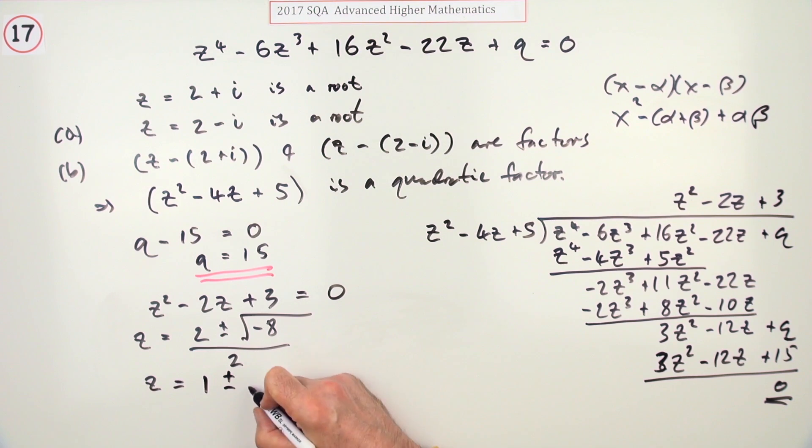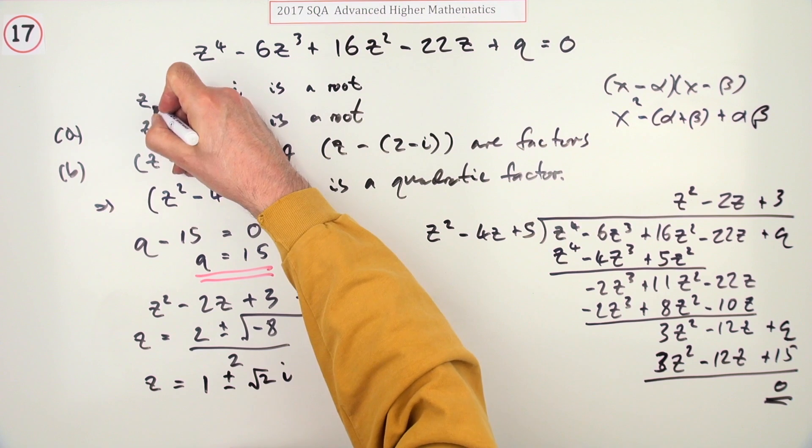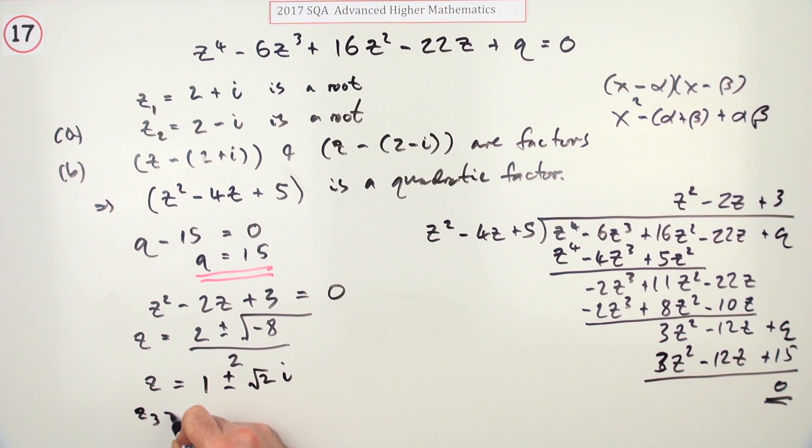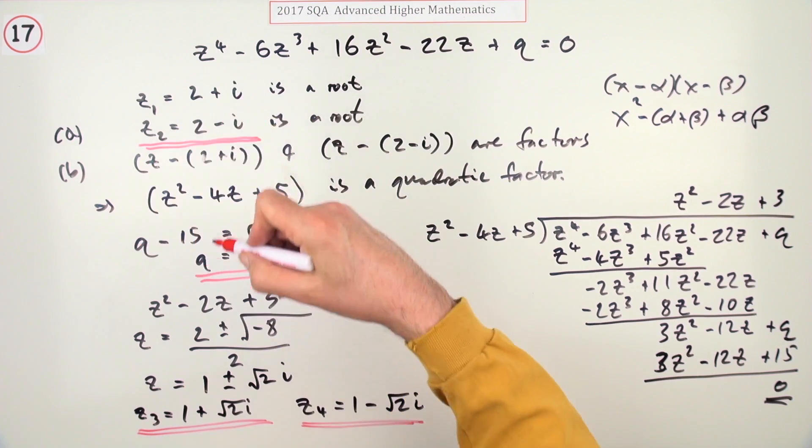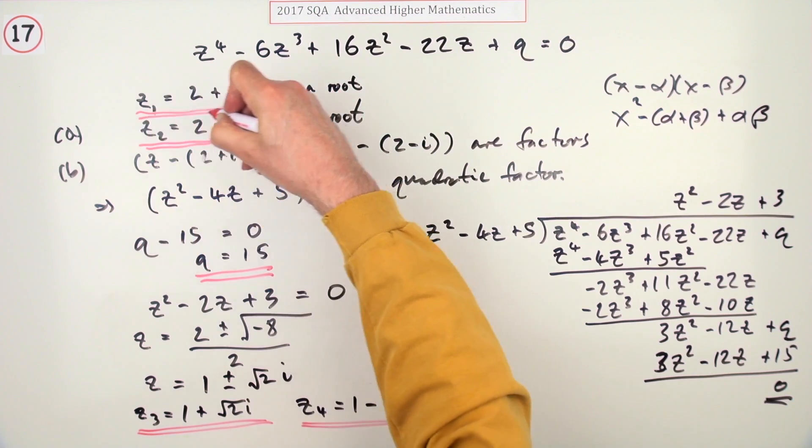The remaining square root of -1 is i. So z₃ = 1 + √2i and z₄ = 1 - √2i. Along with the original z₁ = 2 + i and z₂ = 2 - i, those are all four roots.